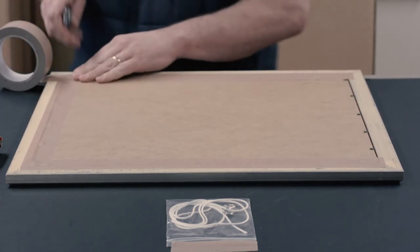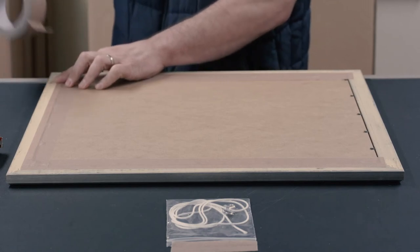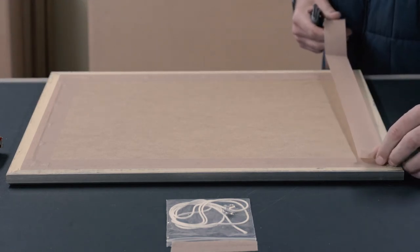Gently press the tape down so that it meets the MDF board, and then go over it again so that it is firmly pressed down all the way along the length.